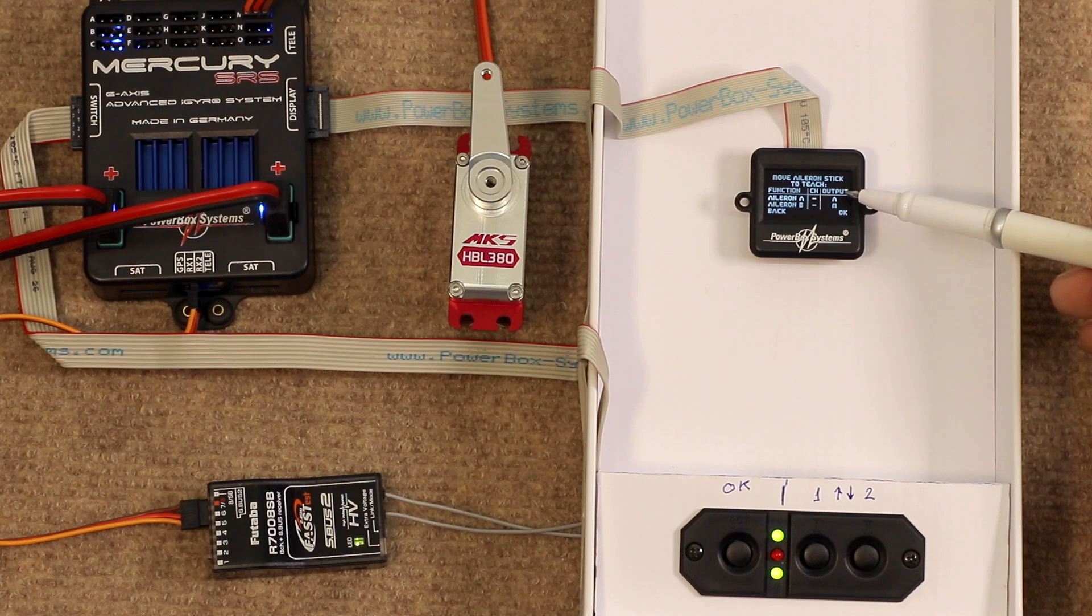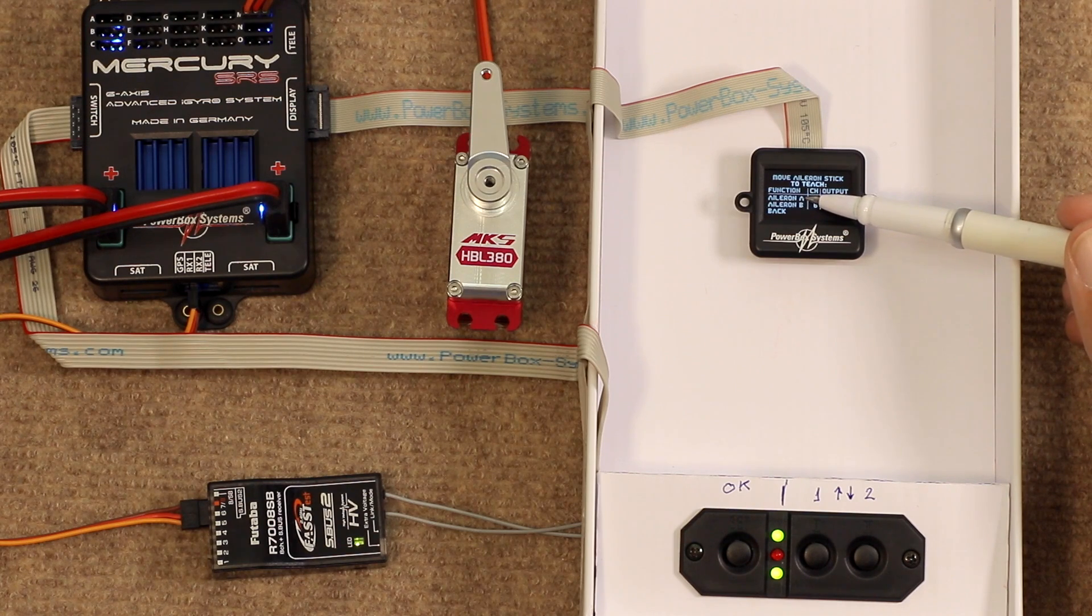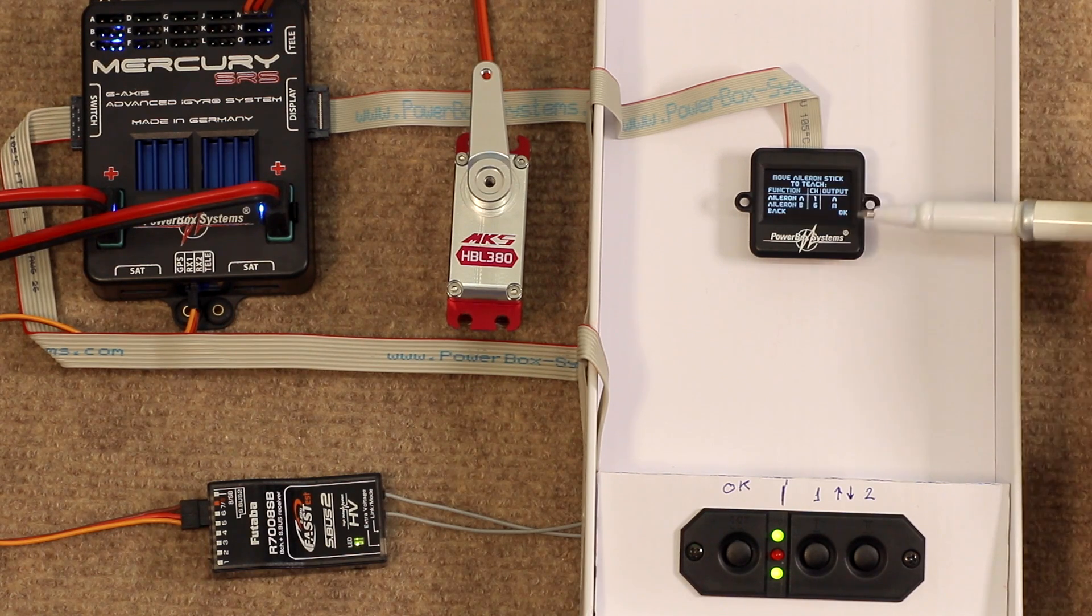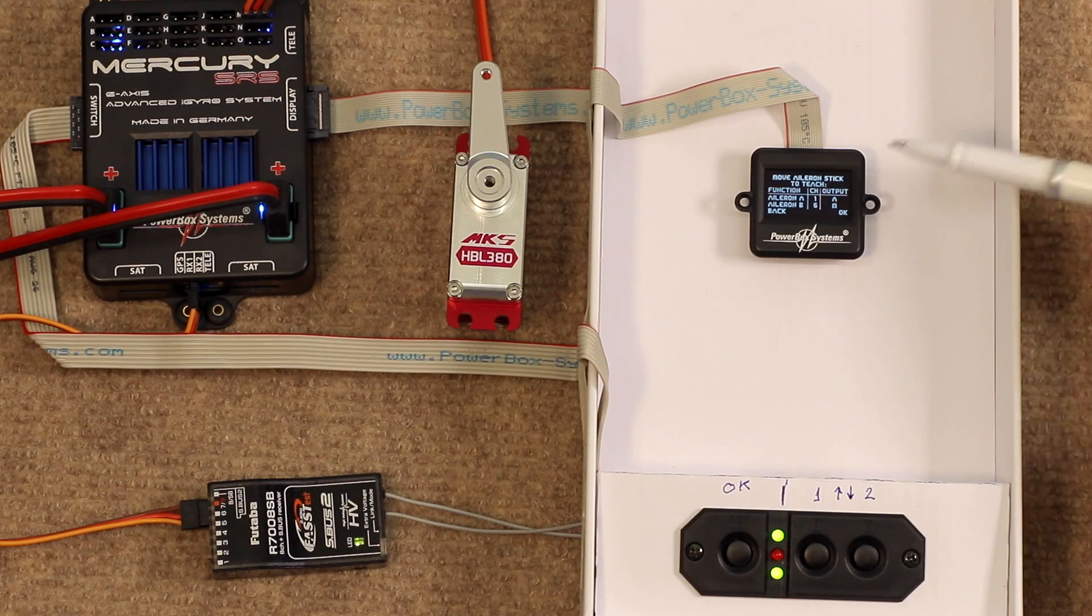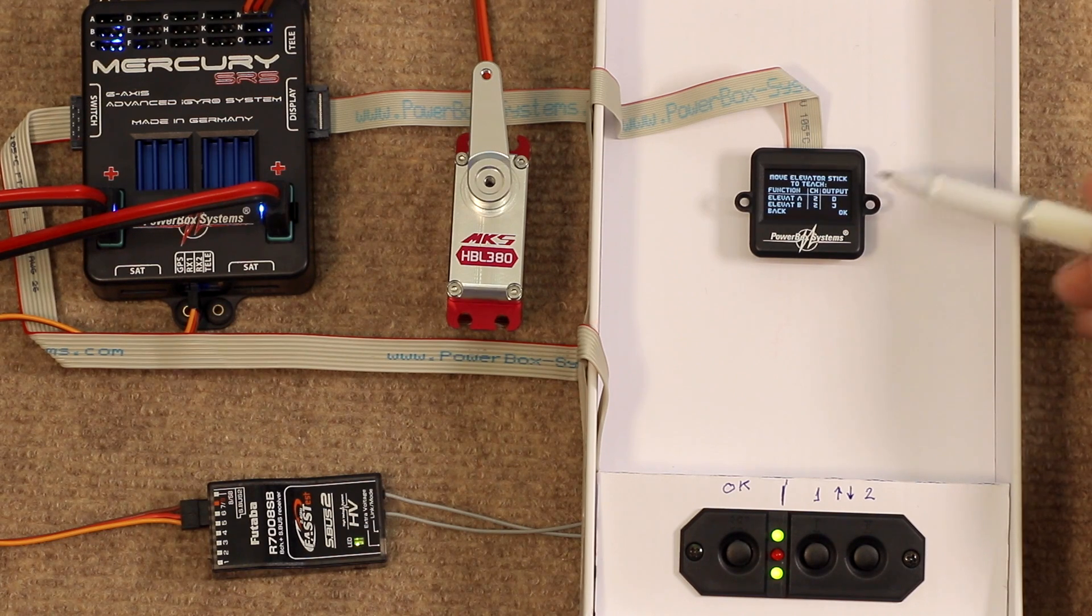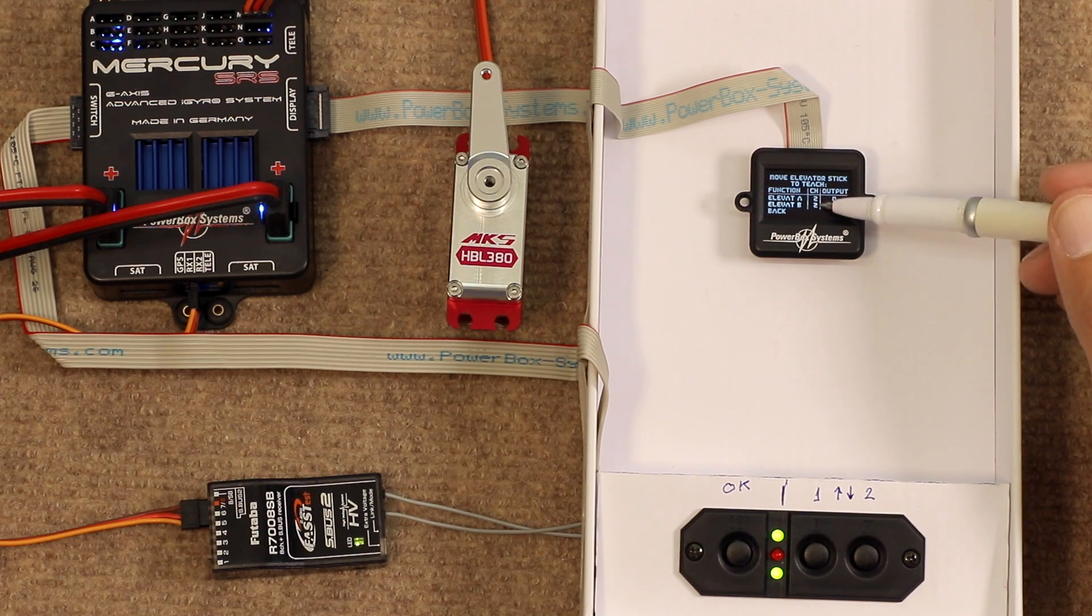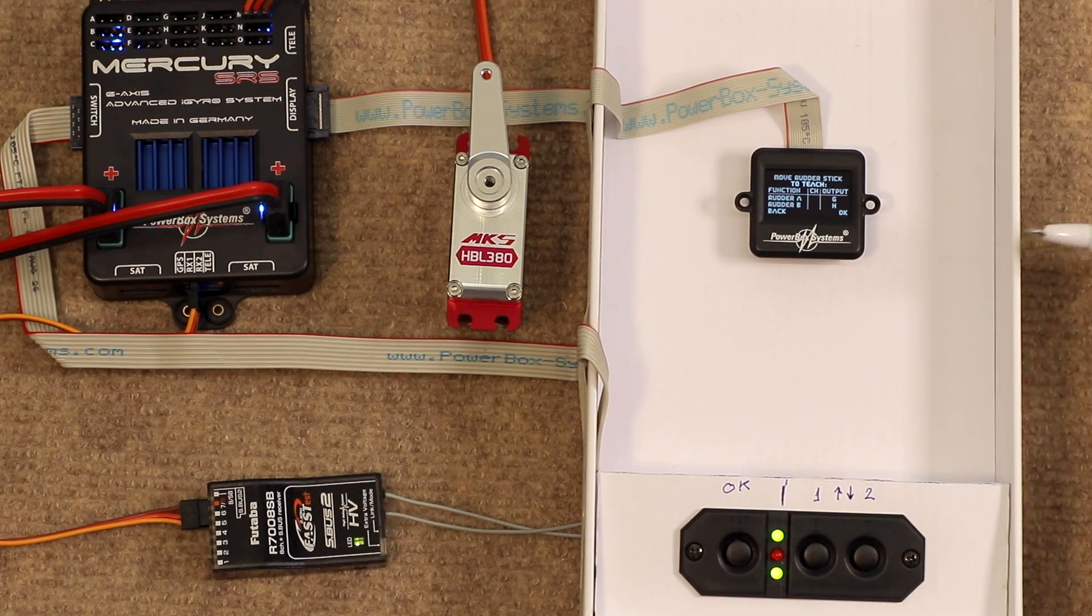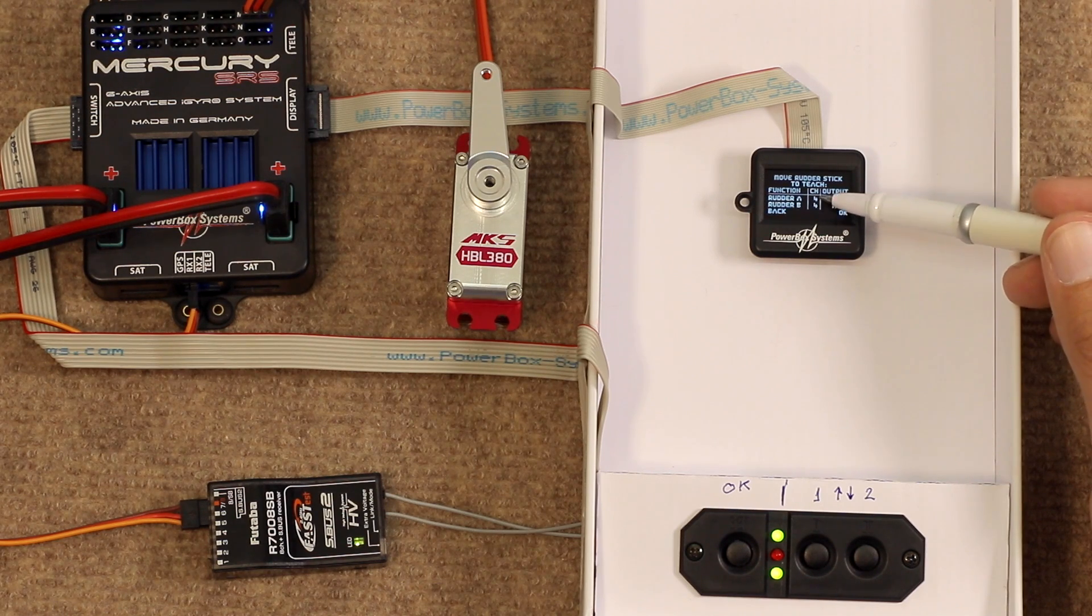Move aileron stick to teach channel. So as we move the aileron stick, as you can see, it has detected channels 1 and 6 for aileron A and B, which are correct. Those are the two channels which I have in my transmitter. And it's automatically assigned them to outputs A and M. We can change those later on if we so wish. Do the same for the elevator. Move the elevator stick. Now as I only have one channel in my transmitter acting as elevator, it has put both elevators down as channel 2 on outputs D and J. Again, we can change those at a later date. Same again for rudder. Again I have just the one channel, so both rudders are showing as channel 4.